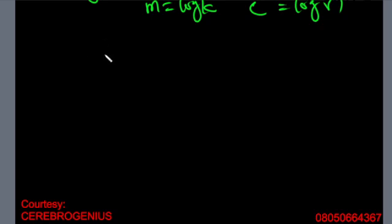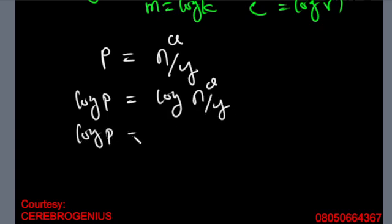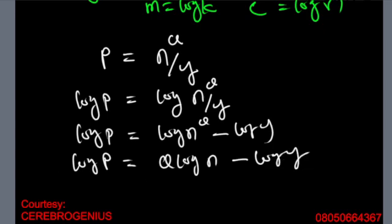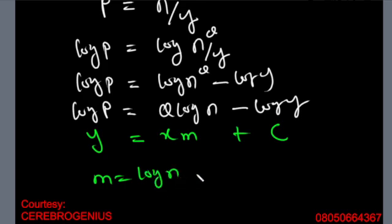What if you have a ratio — say p = n^q / y? It becomes log p = log(n^q / y), which gives log p = log n^q − log y, so log p = q log n − log y. This is your y = xm + c. That means you are plotting log p against q, your slope is log n, and your intercept is −log y.